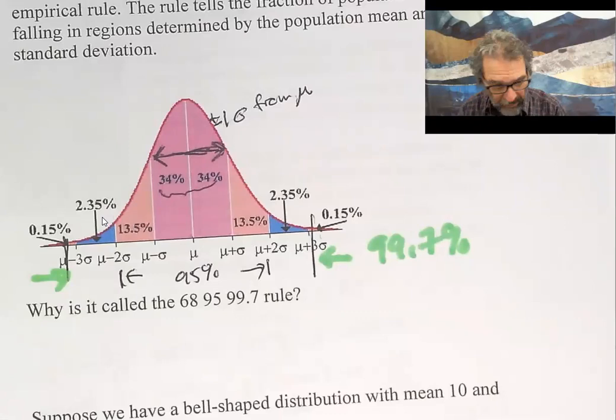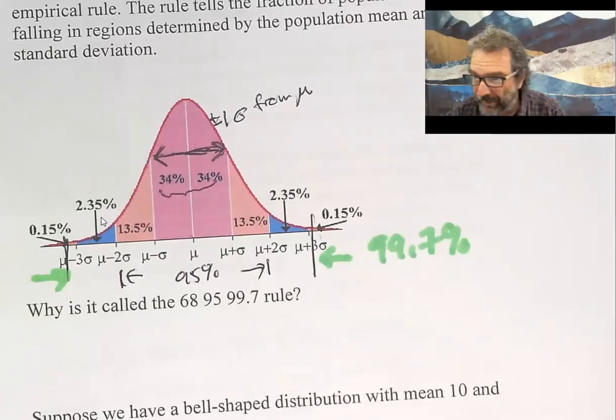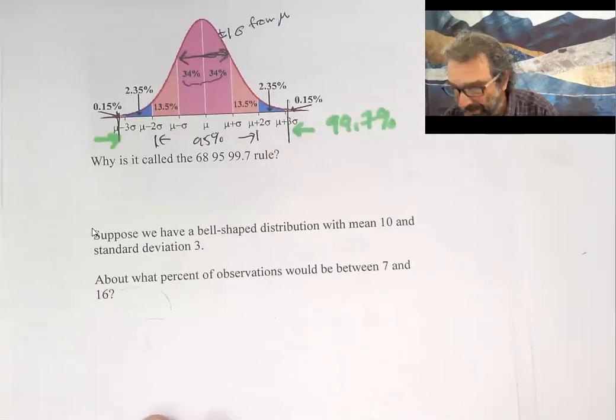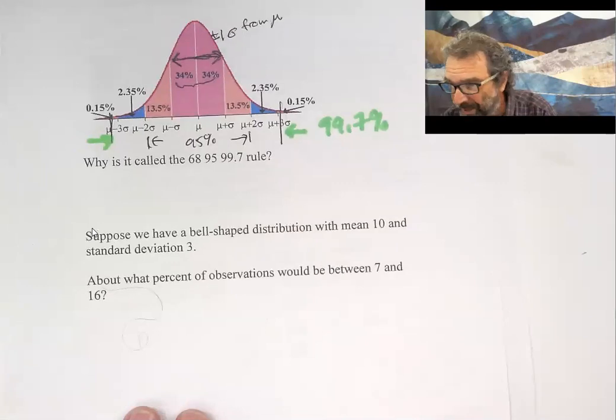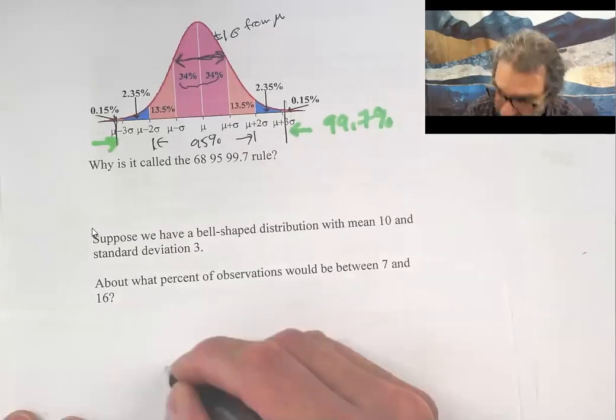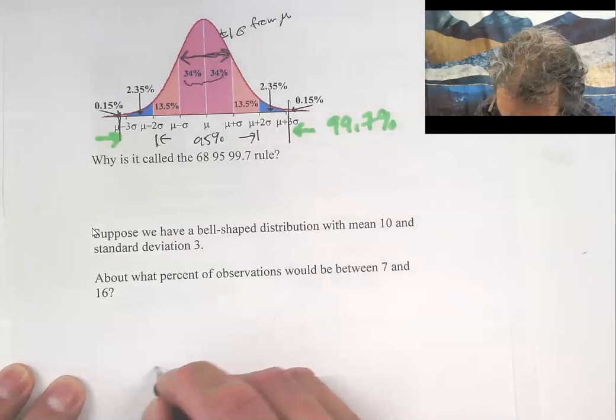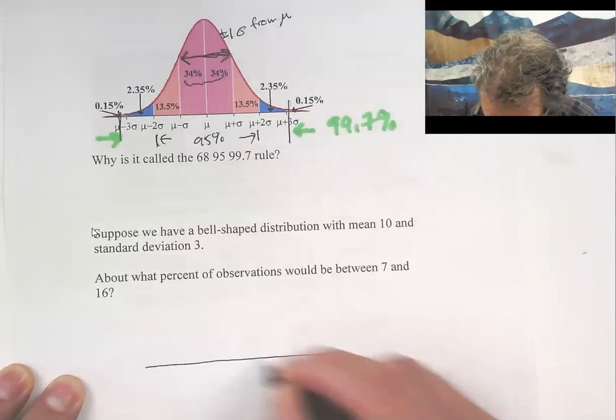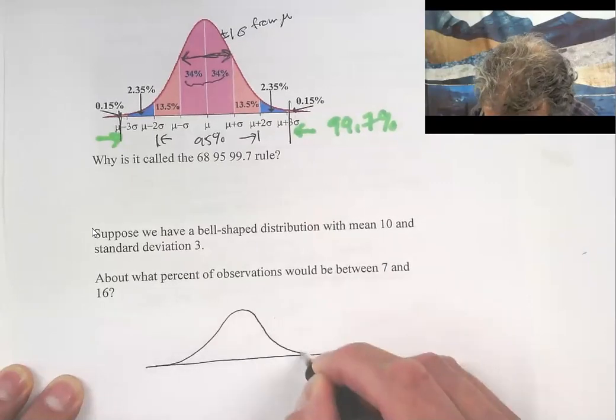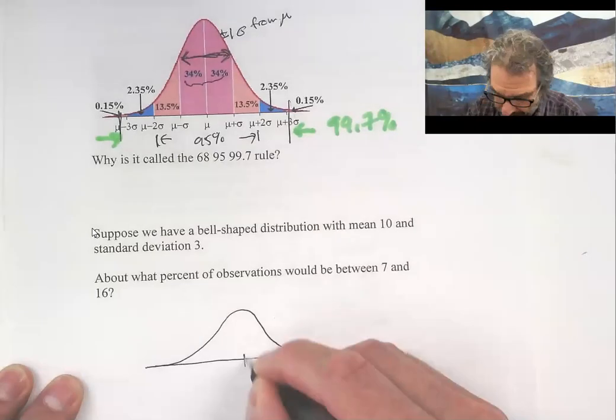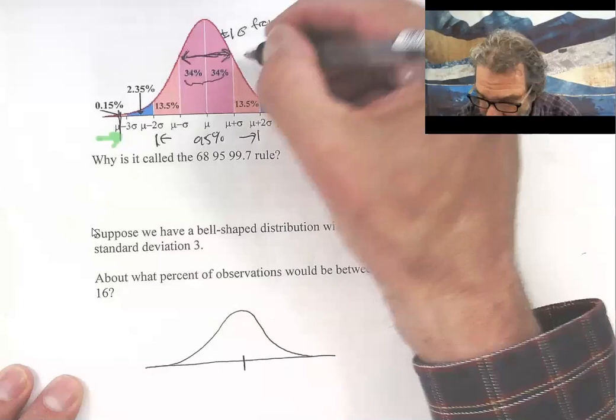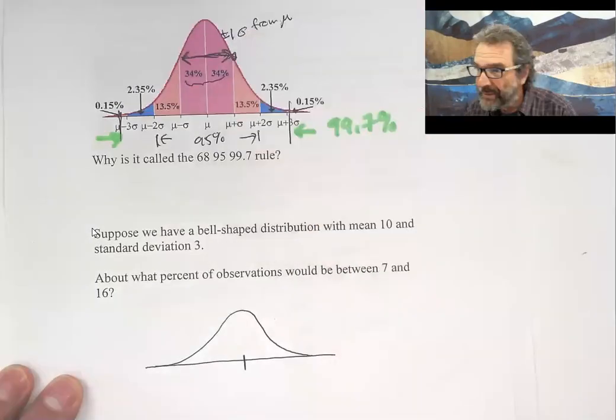Let's see how that looks in practice. Here's an example: suppose we have a bell-shaped distribution and we computed the mean was 10 and the standard deviation was 3. So we make a bell. One standard deviation is at this deepest point on the curve.